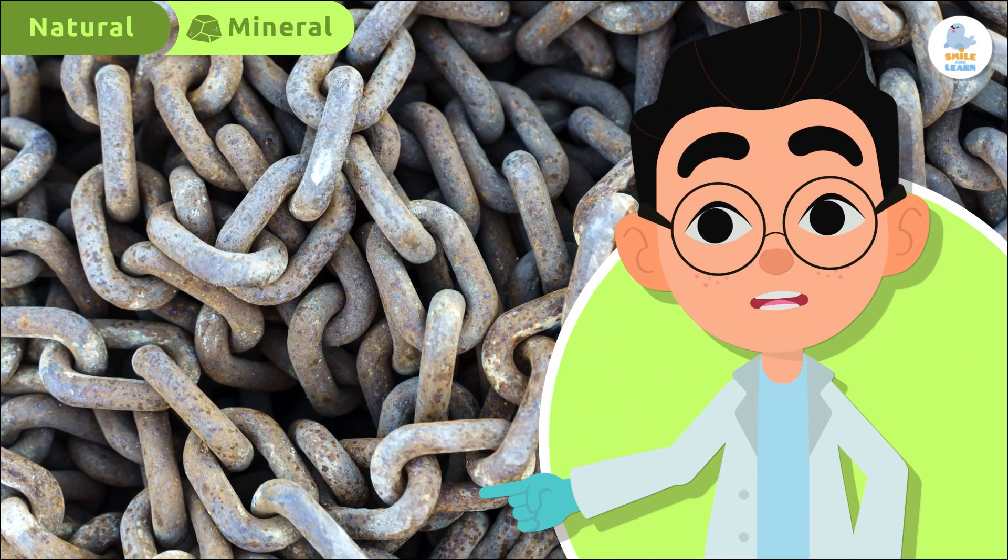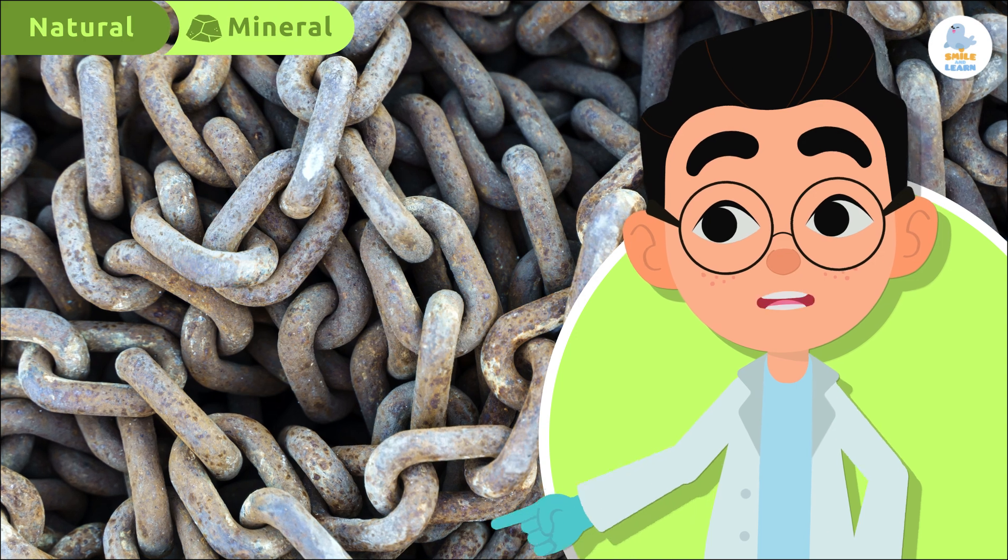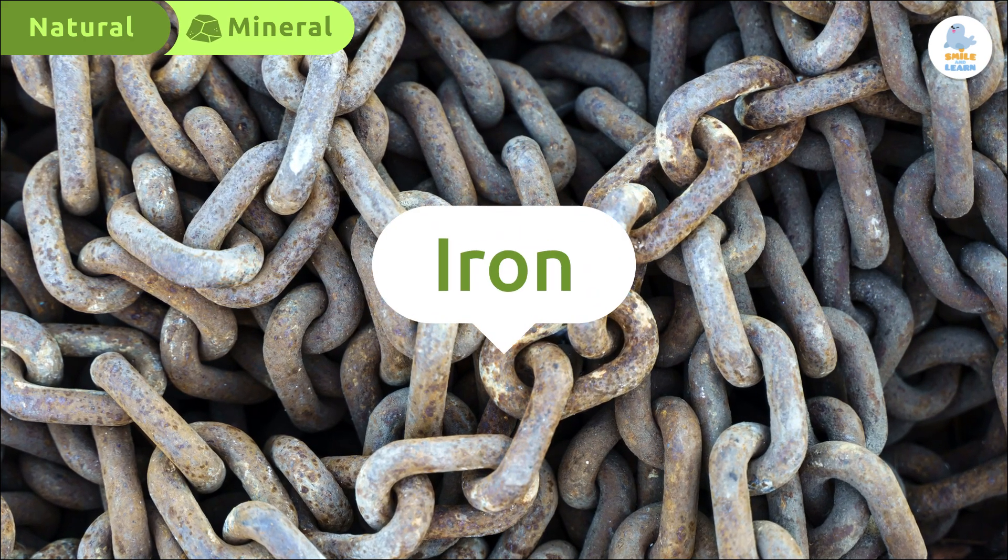And finally, natural materials can be of mineral origin. This means we get them from the earth and rocks, like this iron chain or this clay pot.